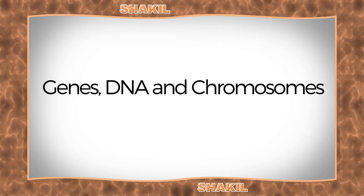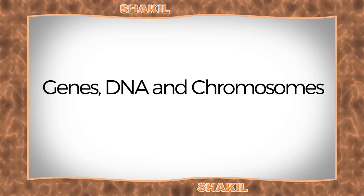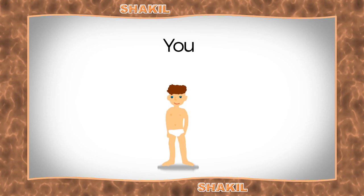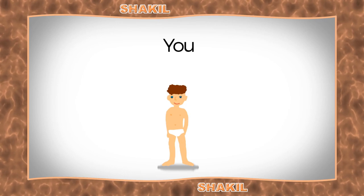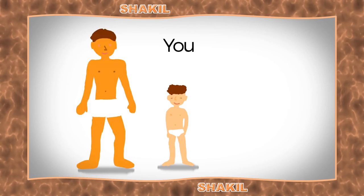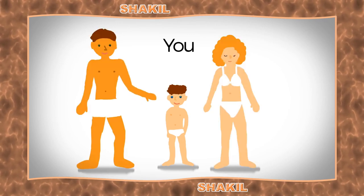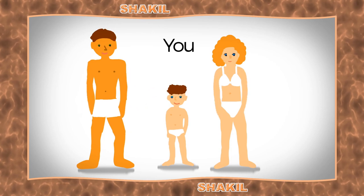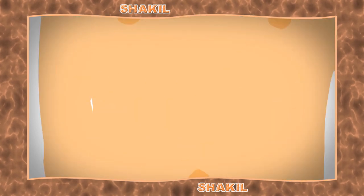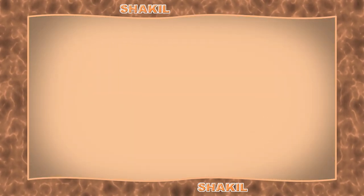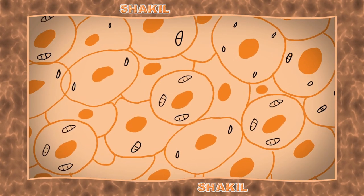Genes, DNA, and chromosomes are what make you who you are. They are the set of instructions that are given to you by your father and mother. These instructions are in your cells, and all living organisms are composed of cells.